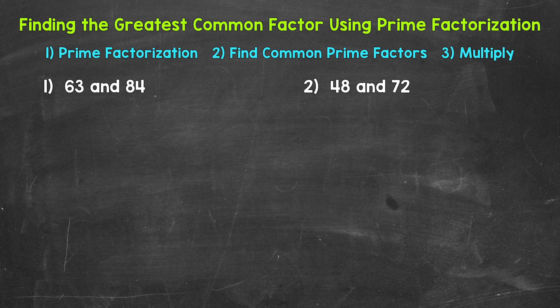Let's jump into our examples starting with number one where we have 63 and 84. Let's start with the prime factorization of 63, and we will start with the factors of 7 and 9. 7 times 9 equals 63, so 7 and 9 are factors of 63.